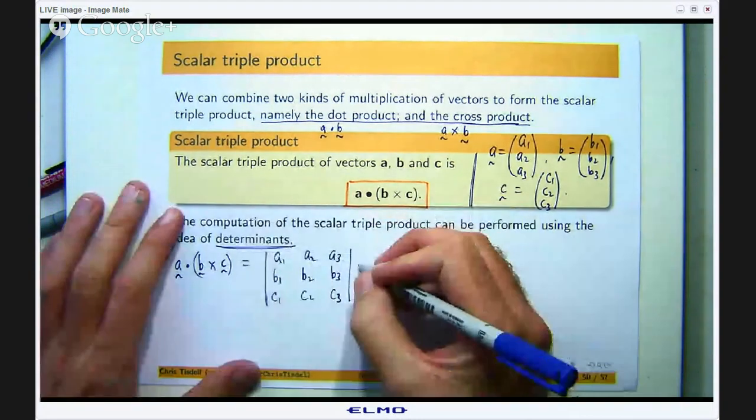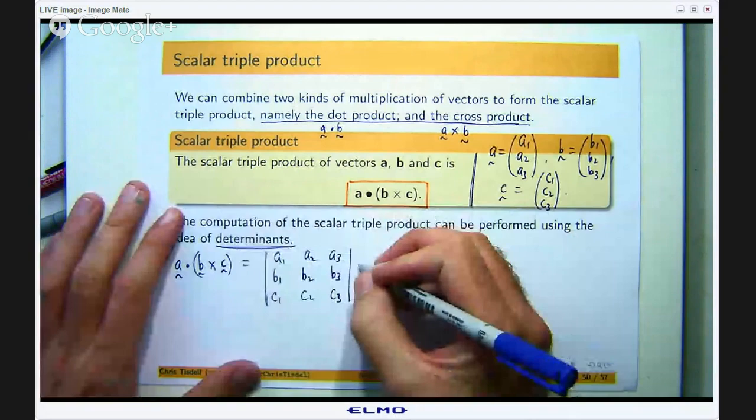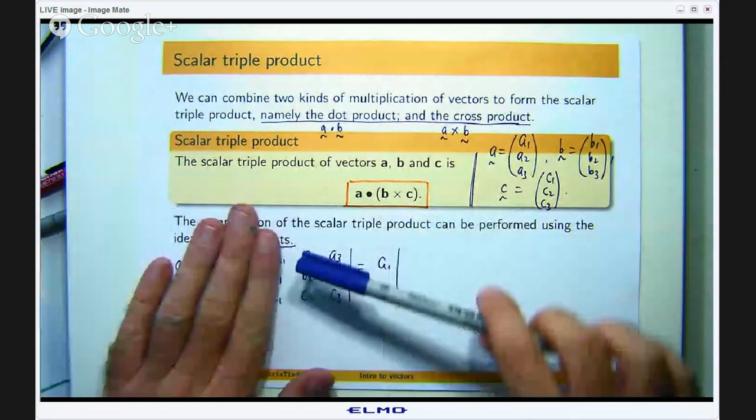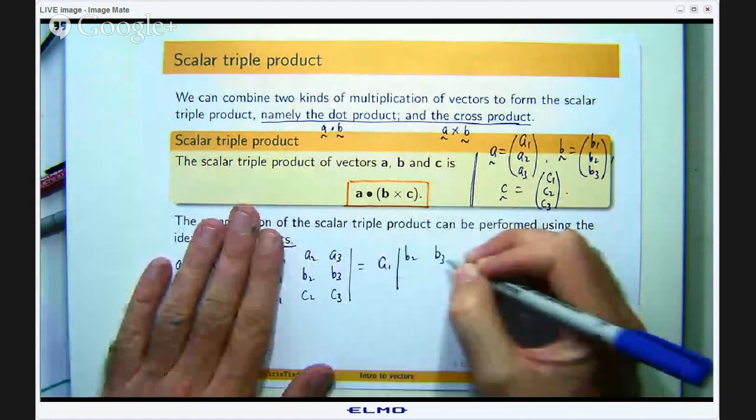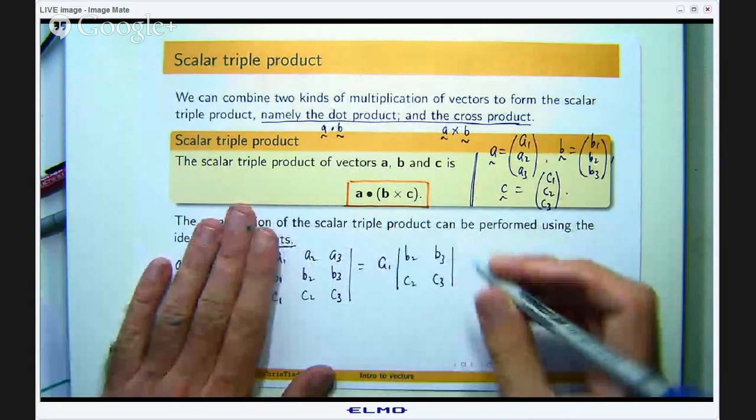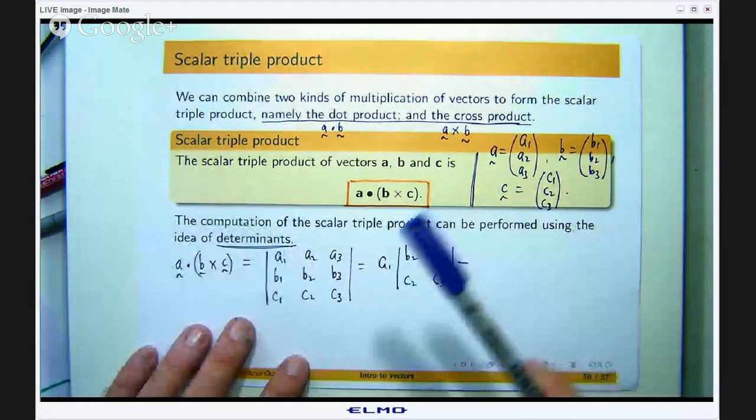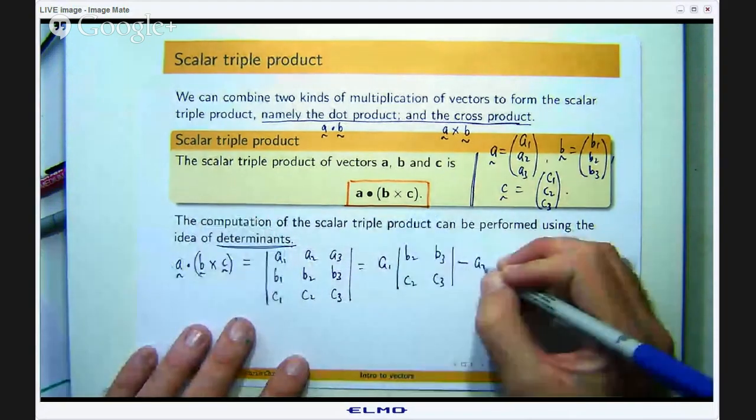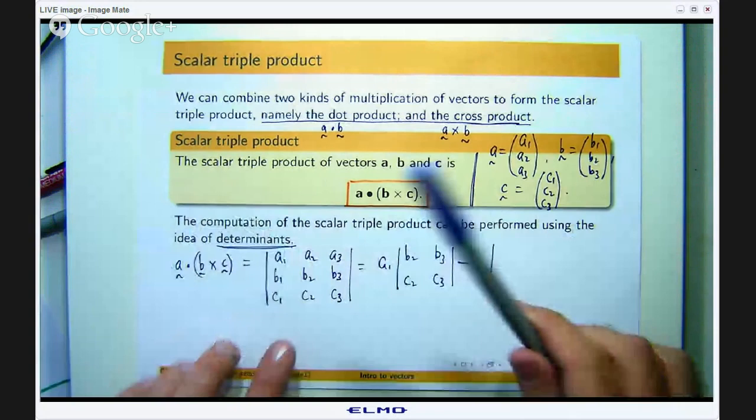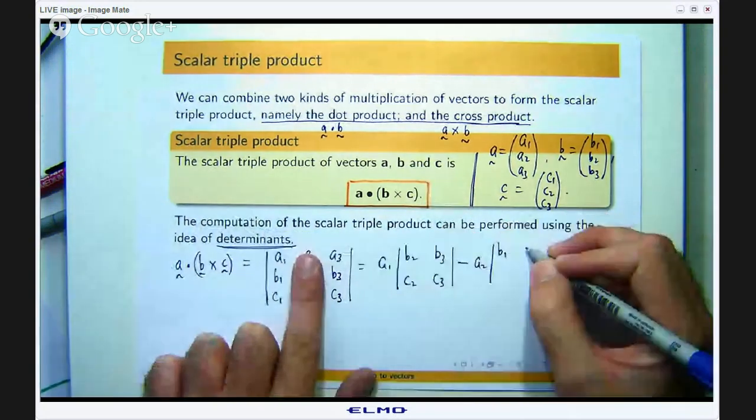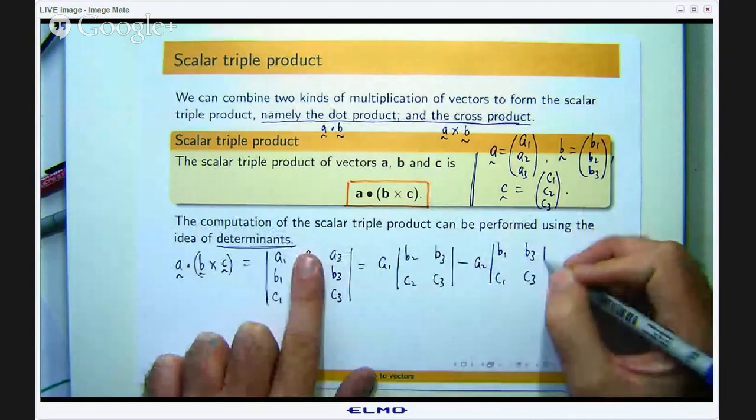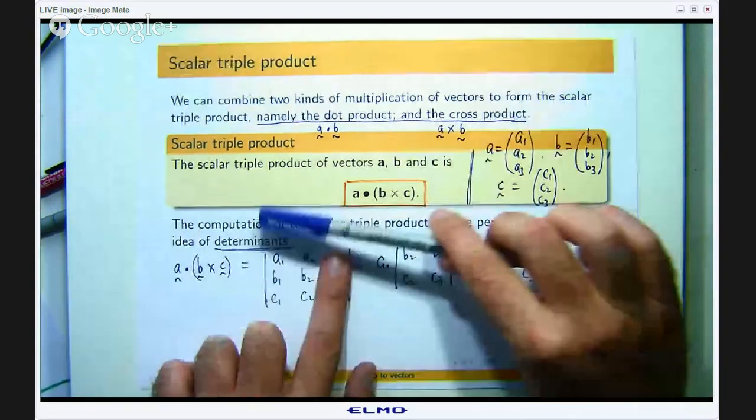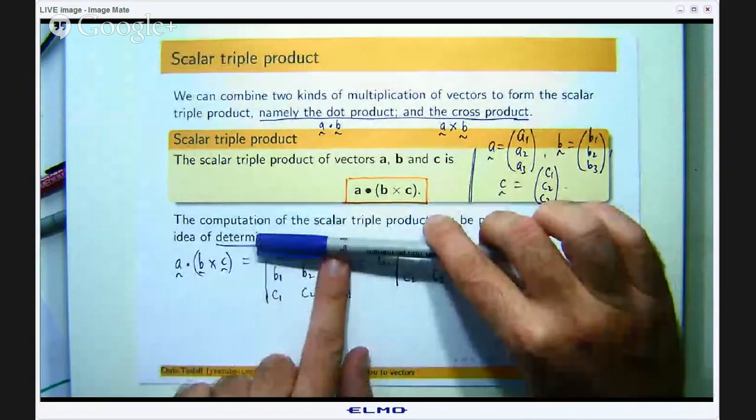So it is just the following: a1 times this determinant, so it will be b2, b3, c2, c3. Now this is important, you go to a minus sign next with the a2. So that will be b1, b3, c1, c3. And then a3, b1, b2, c1, c2.